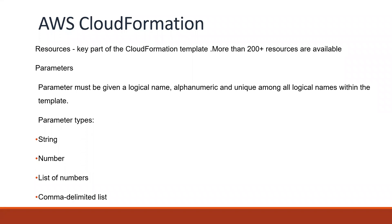Resources is a key part of the CloudFormation template. Without resources, we cannot do anything. So things like EC2 instances or S3 buckets — these all come under resources. We have more than 200 plus resources available that we can use under the resources tag.